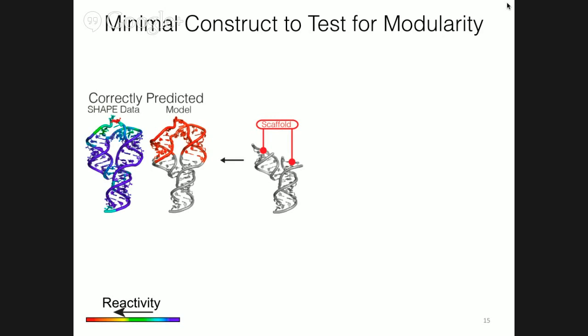Here's an example. We build a model — the new segment is shown in red on the right side — then we perform SHAPE to see if the tetraloop receptor residues are protected. You can see in blue that those residues are not reactive, so in this case we would say this works because the tetraloop receptor, if it's not reactive, we think it's formed. This roughly suggests that our model is correct. Then if we produce another construct — the proposed structure is on the left and the SHAPE result on the right — you can see that the tetraloop receptor is reactive, and on top of that, the SHAPE does not match the expected secondary structure.